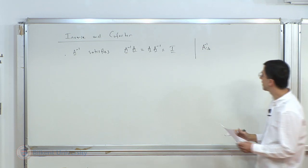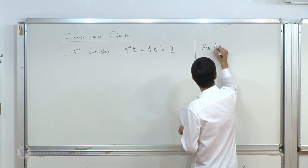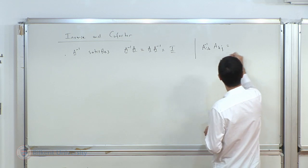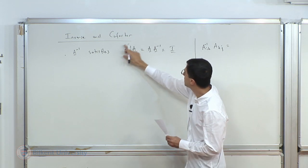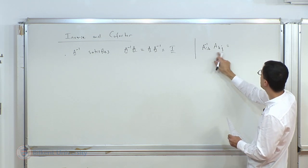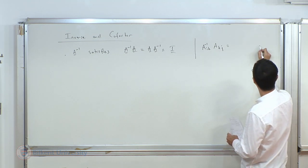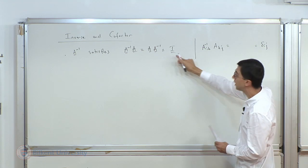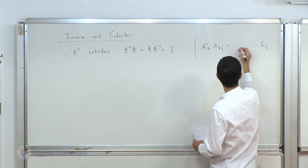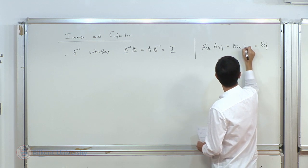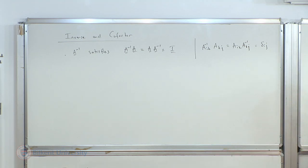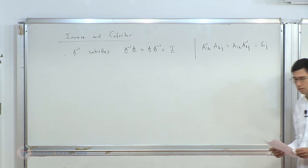There are different names for these things — cofactor, adjugate, adjoint — floating around. This is a common choice. The cofactor tensor equals the determinant of A times A inverse transpose. So once I know the cofactor, I can calculate A inverse. The adjugate is simply the transpose of the cofactor.